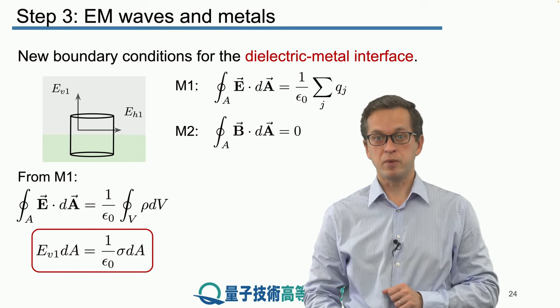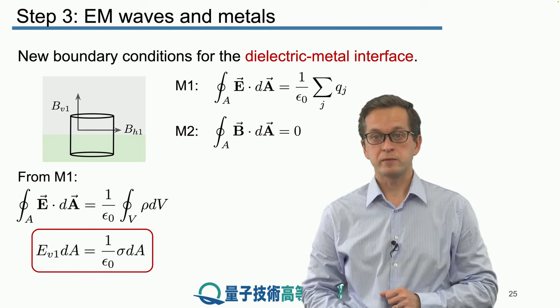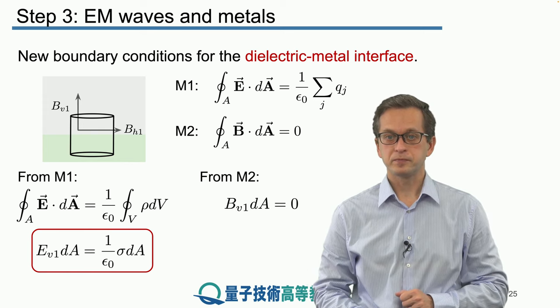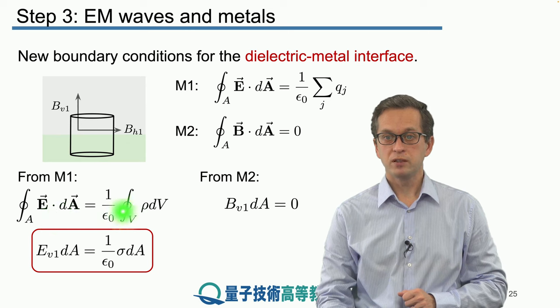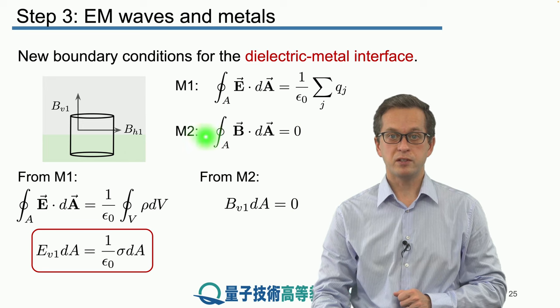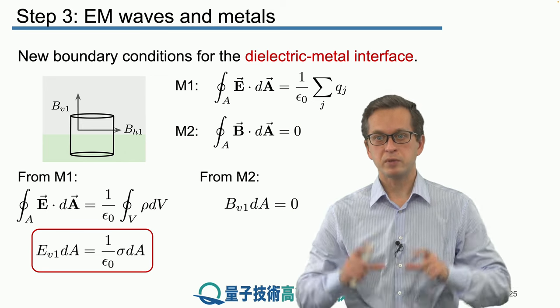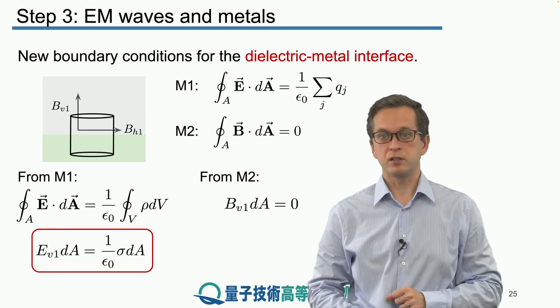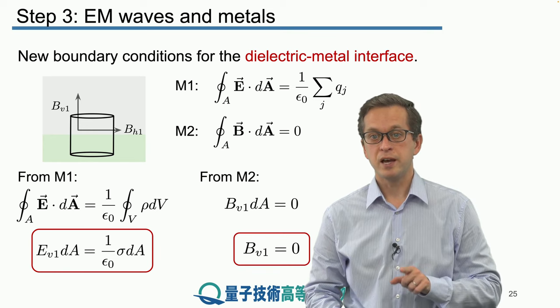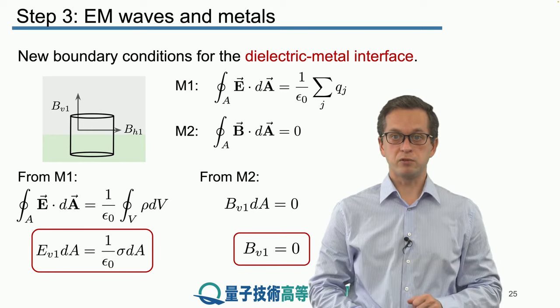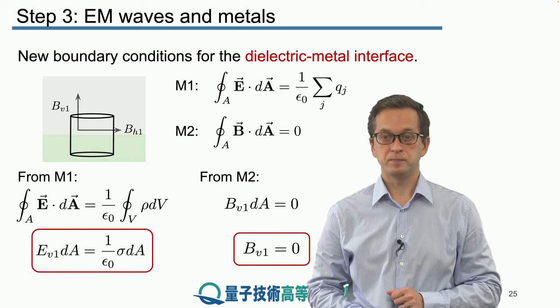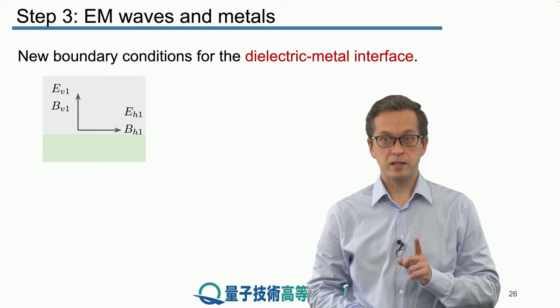Now, let's see what are the other boundary conditions. From Maxwell's second equation, we can see that B_V1 times dA has to be zero, because the flux through a surface is zero. And again, we are skipping a few steps by shrinking the cylindrical surface. So, automatically we get, because the area is finite, that B_V1 is equal to zero. In other words, there is no vertical component for the magnetic field at the boundary.